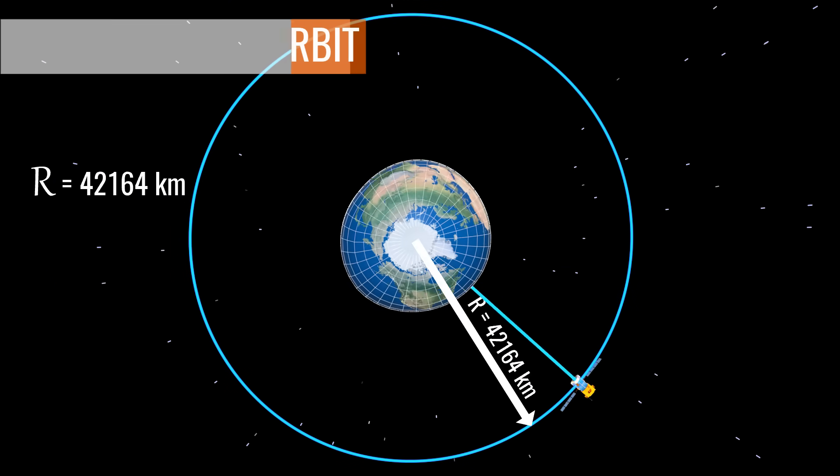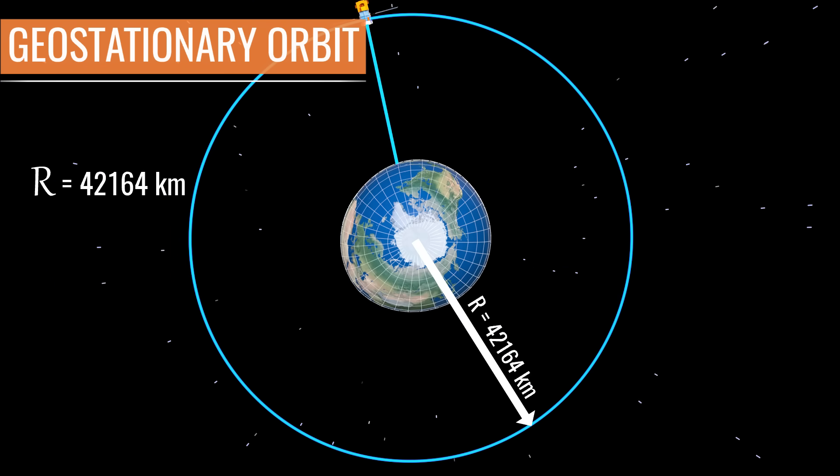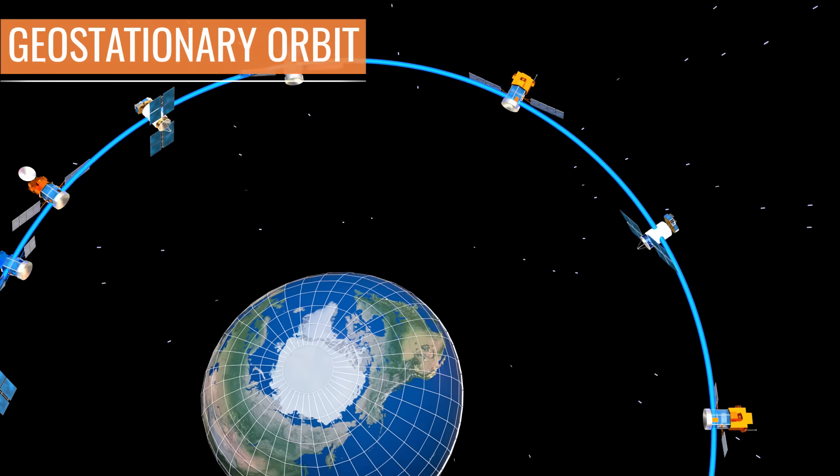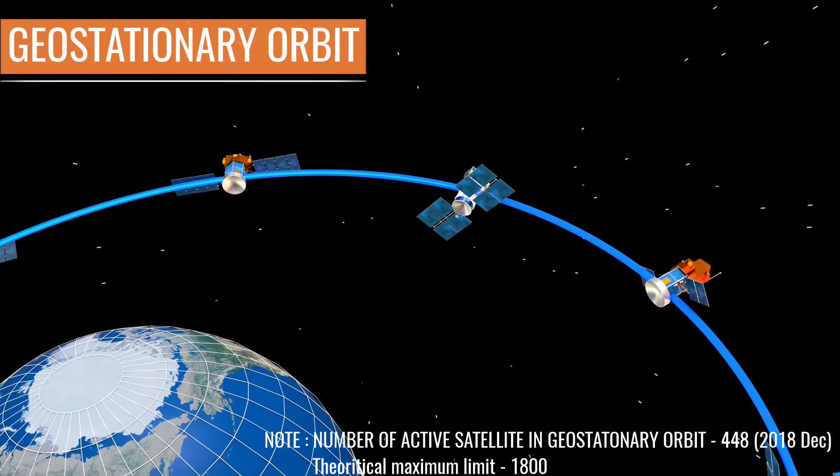This orbit is known as a geostationary orbit. All satellites used for satellite TV purposes should be parked in this orbit. And this visual shows how crowded the geostationary belt has become nowadays.